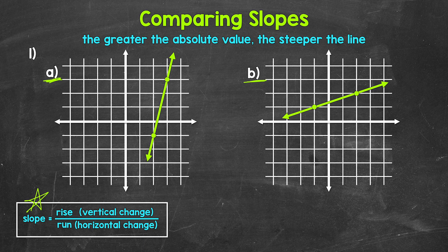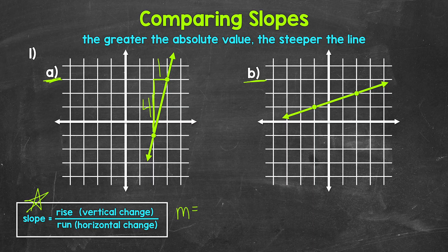Let's start by finding the slope of line A. We need to find the rise and run between the two given points, working from the left point to the right. The rise is four units up to align with the other point. Then for the run, we go over one unit to get to the other point, so the run is one. The slope M equals the rise of four over the run of one, which is four over one, or simply four.